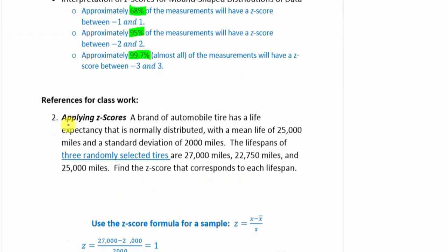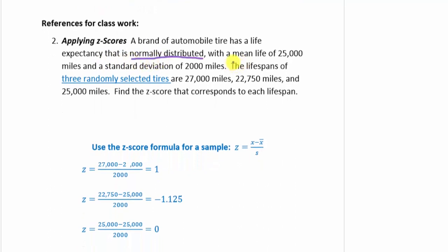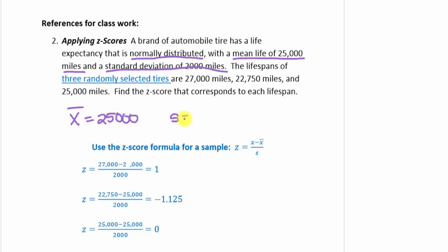Let's look at a reference for class 1, applying z-scores. A brand of automobile tire has a life expectancy that is normally distributed with a mean life of 25,000 miles and a standard deviation of 2,000 miles. The lifespans of three randomly selected tires are 27,000 miles, 22,750 miles, and 25,000 miles. Find the z-score that corresponds to each lifespan. The mean is x-bar equal to 25,000 miles, and s equals 2,000 miles.